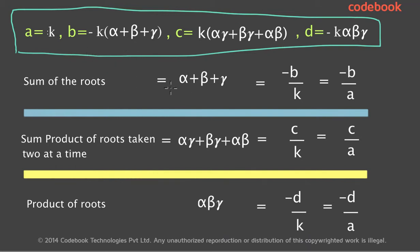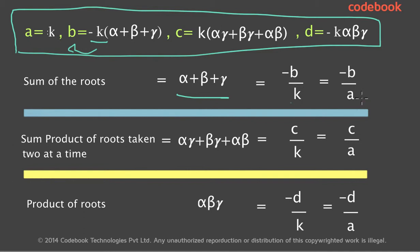Now let us find the sum of the roots. The sum of the roots is α + β + γ. From the coefficient equation b = -k(α + β + γ), taking -k to the other side gives α + β + γ = -b/k. Since k = a, this gives α + β + γ = -b/a. So the sum of the roots of a cubic polynomial equals -b/a, where b is the coefficient of the x² term and a is the coefficient of the x³ term.